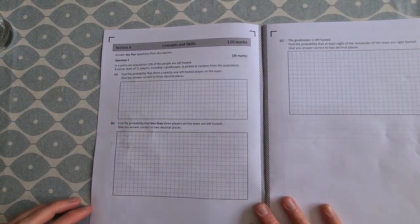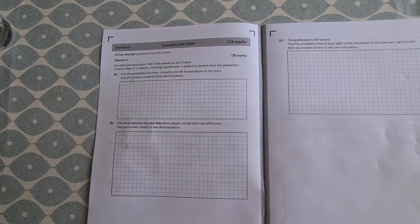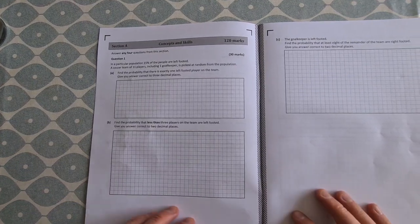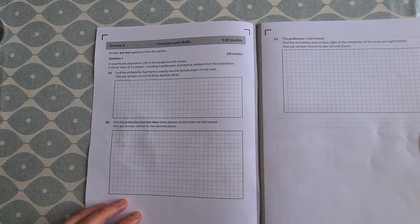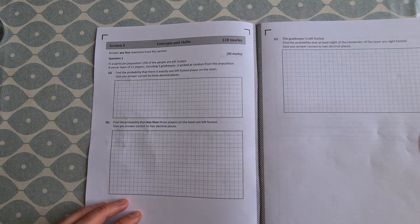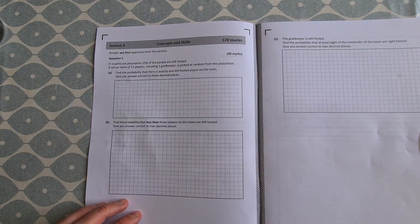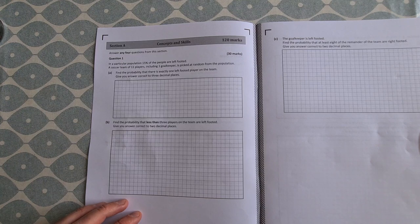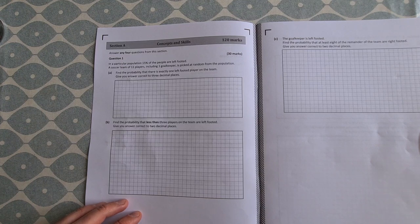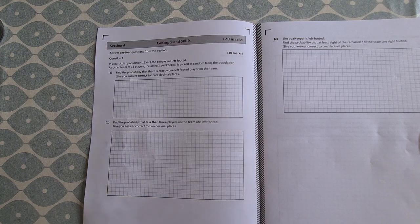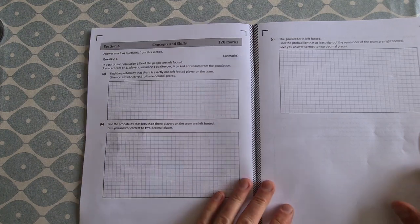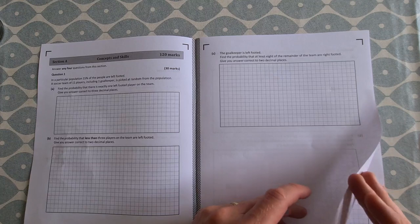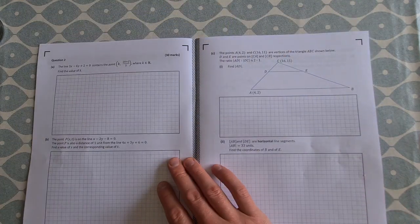First question was a probability question. I think this one was grand. A lot of good comments about this. Students found it easy enough. 15% of people are left-footed, of 11 players including one goalkeeper picked at random from the population, find the probability that there's one left-footed player on the team. So nothing too difficult there. I think that was a nice question to start off with.